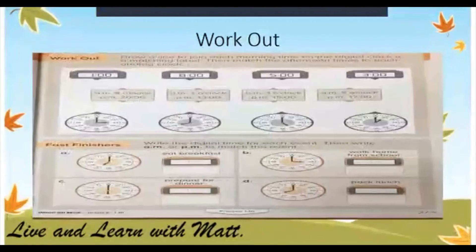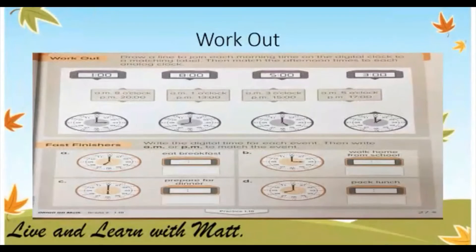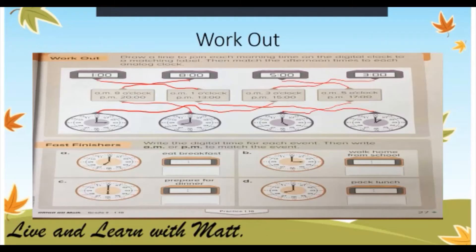Now let's go on to the workout. Draw a line to join each morning time on the digital clock to a matching label, then match the afternoon times to each analog clock. One o'clock connects to 1 a.m. and 13 o'clock. Eight o'clock matches 8 o'clock in the morning or 20 o'clock in the evening. Five o'clock matches 5 o'clock or 17 o'clock. Three o'clock in the morning matches here or 15 o'clock in the afternoon.